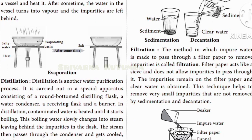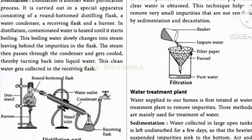Filtration acts like a sieve and does not let any insoluble impurities pass through the filter paper. You take filter paper, gravel and sand, or cotton, put it into a funnel, then pour the impure water through it. The insoluble impurities are trapped. Usually, sedimentation and decantation are done first, followed by filtration, to make removal of impurities easier.